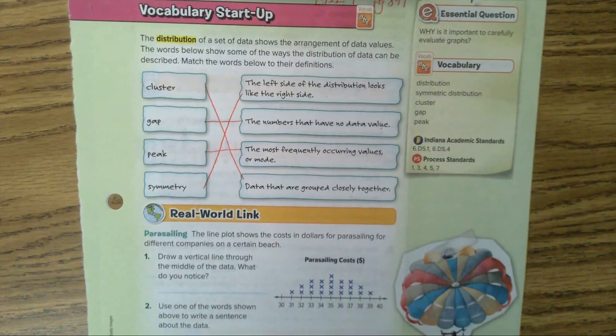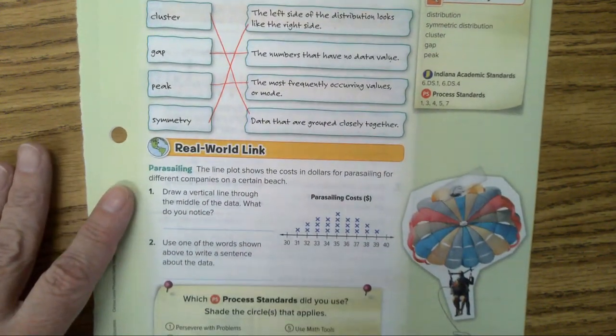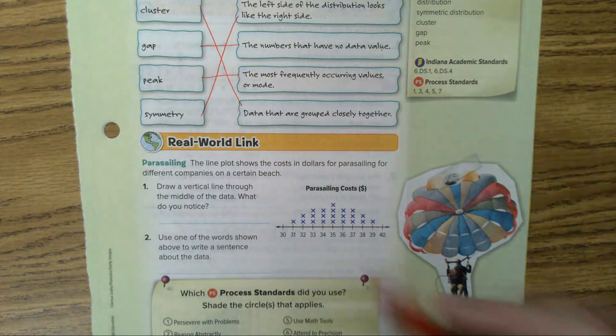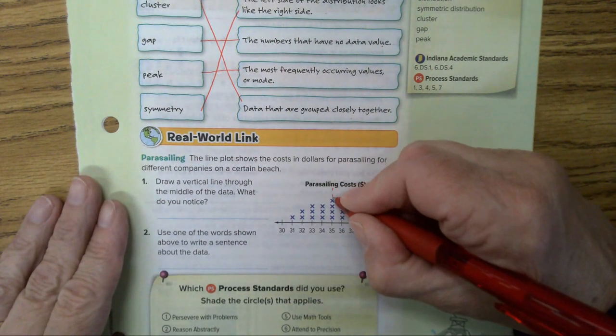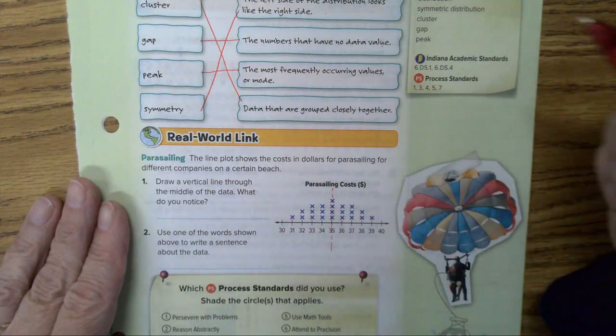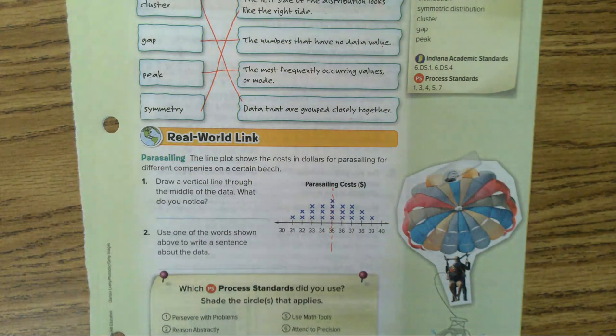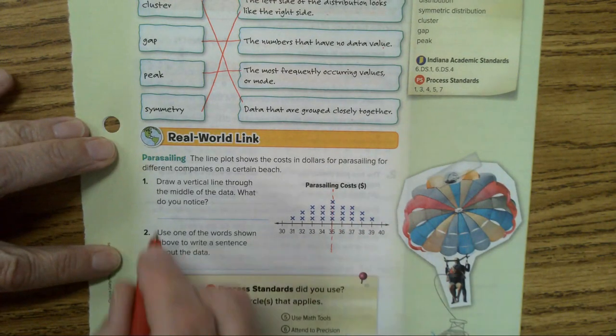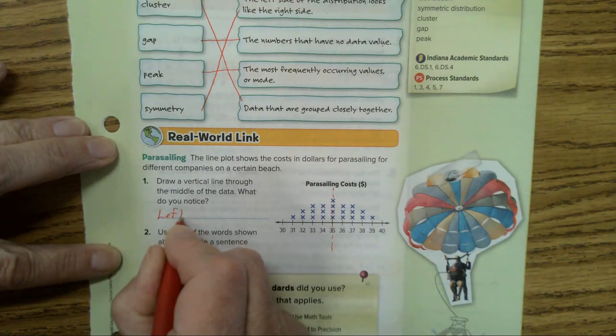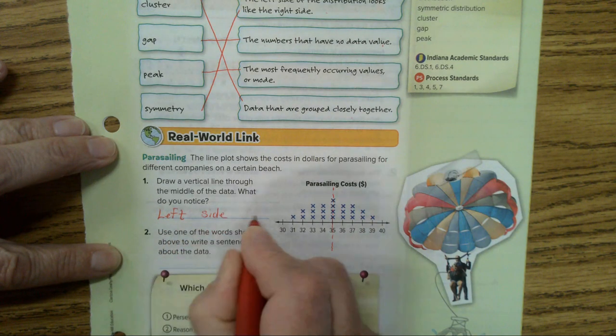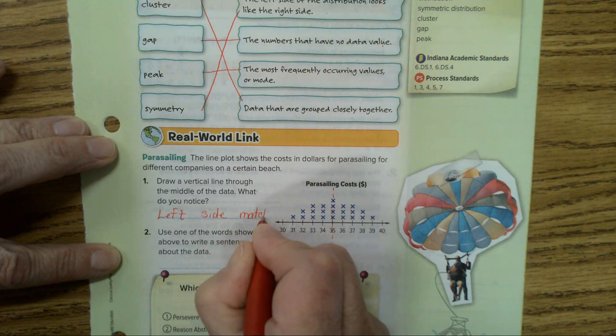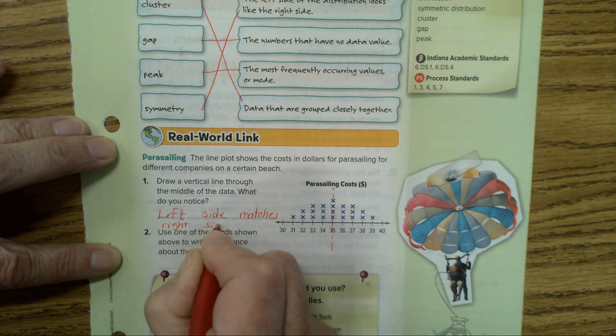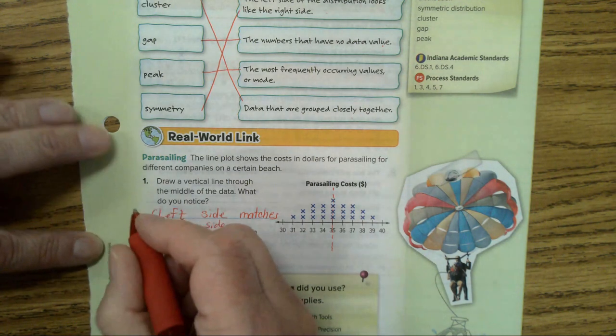Let's go down to number one in our real world link. Draw a vertical line through the middle of the data. What do you notice? This is the middle. What do you notice, kids? It's symmetrical. Yes. The left side looks like the right side. It's a match. Left side matches right side. And we know the word for that is it has symmetry.